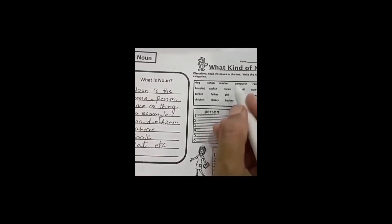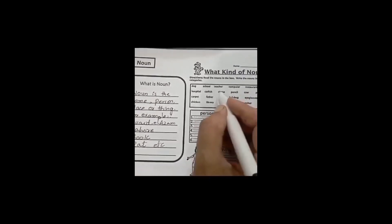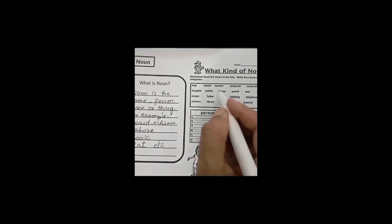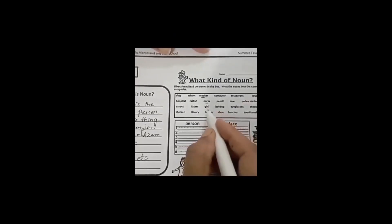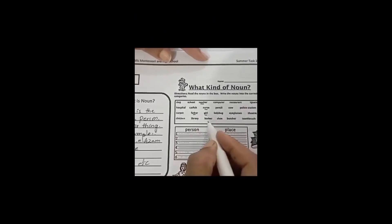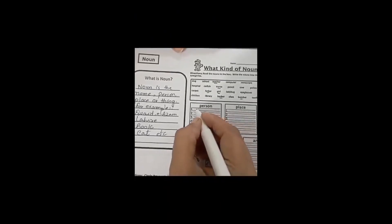Your second question is what kind of noun? Read the nouns in the box and write them into the correct categories. The first thing is person. Let's check it out. Teacher, nurse, father, girl, barber, butcher. Write the name of person in the given list.